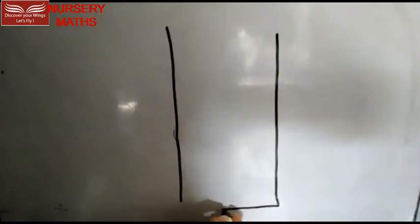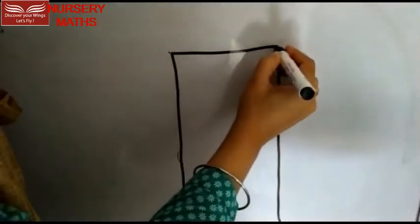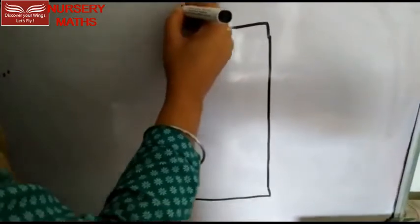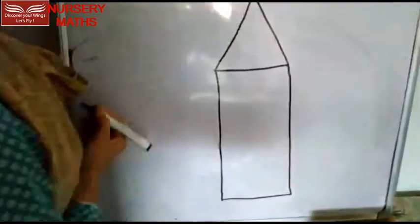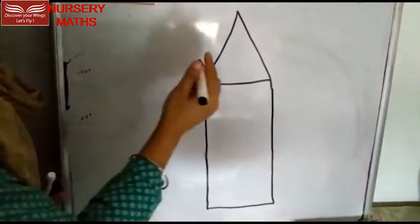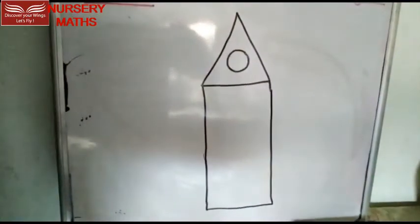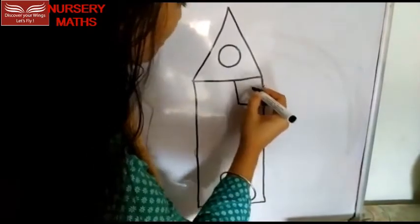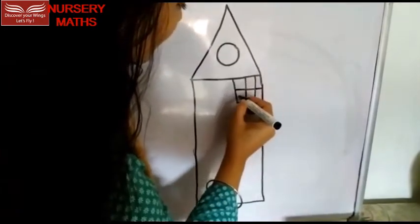This shape is a rectangle. Then we will make a triangle. Okay then we will make a circle. Now square - standing line, sleeping line.